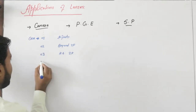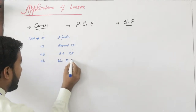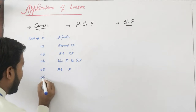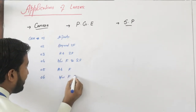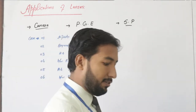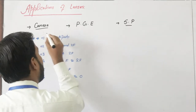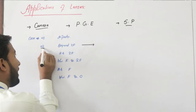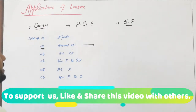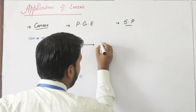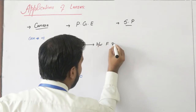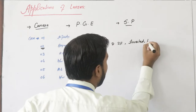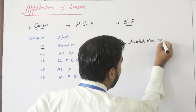Case 4 was when object is placed between F and 2F. The fifth case is at F, and the last case is between F and Optical Center. In six cases, case number two was when object is placed beyond 2F — between F and 2F — and inverted or smaller than object.